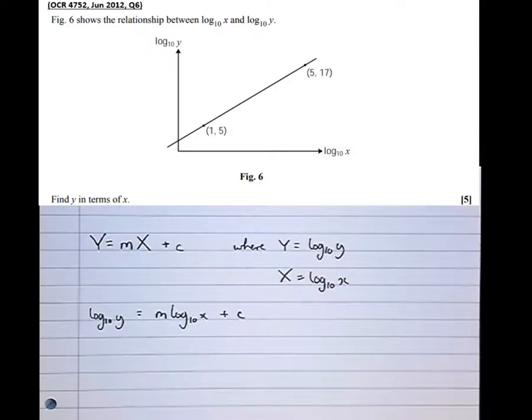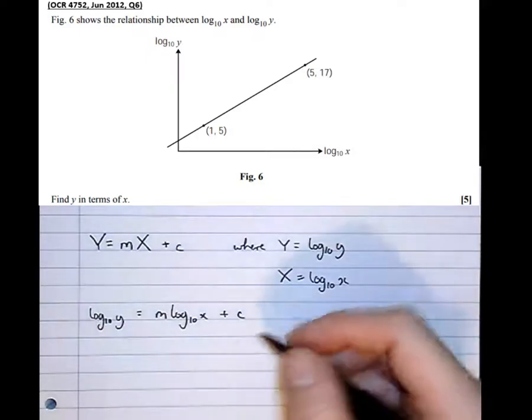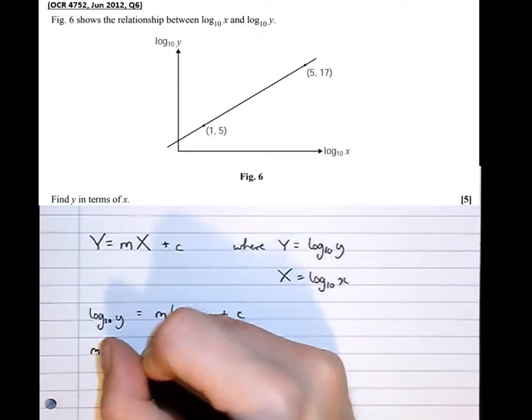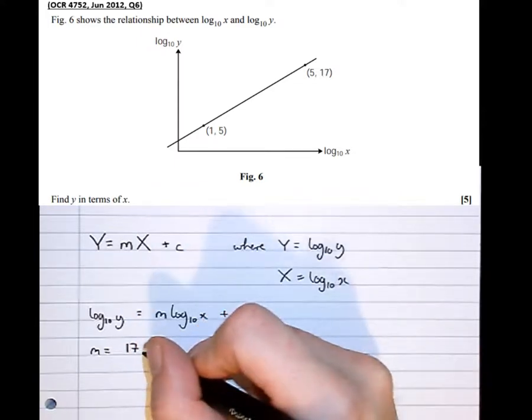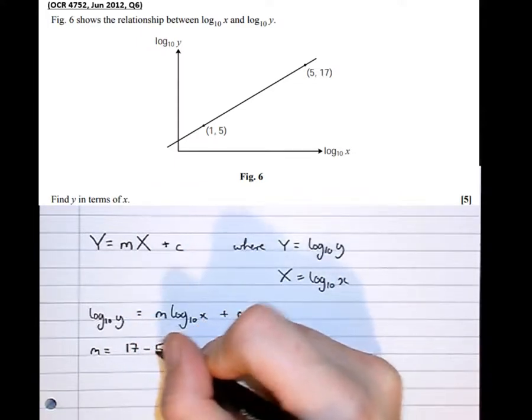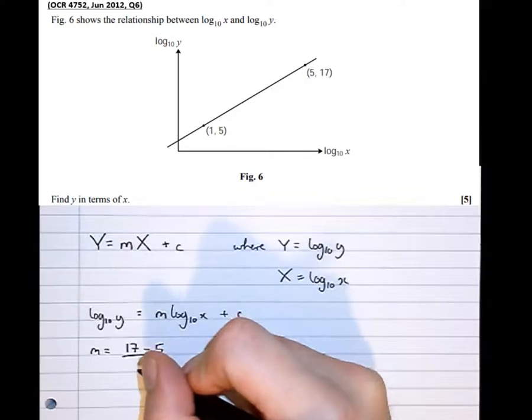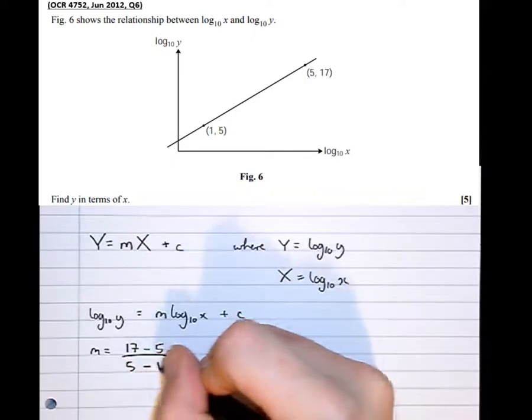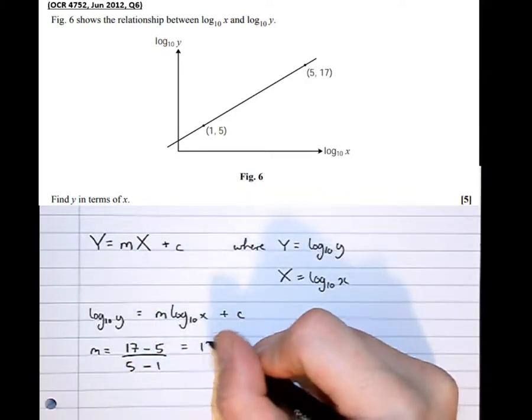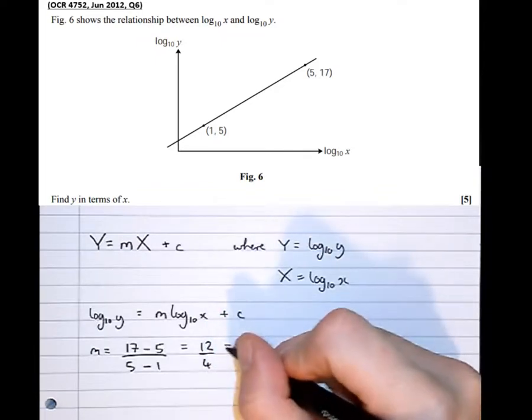So m is the gradient. We can see here that m equals the y difference, 17 take 5, over the x difference, which is 5 take 1, which is 12 over 4, which is 3.